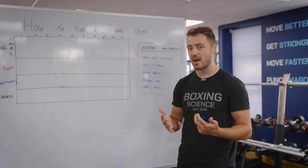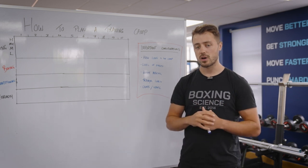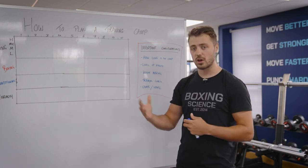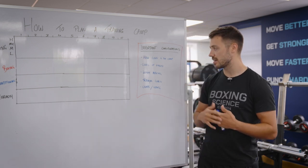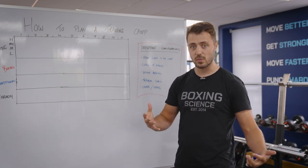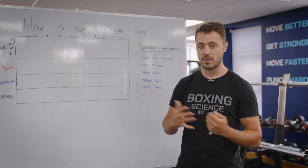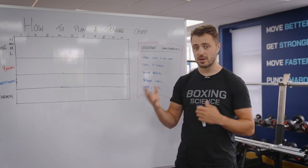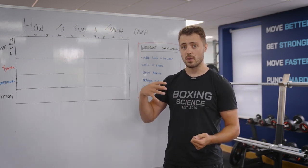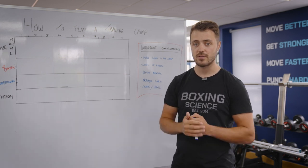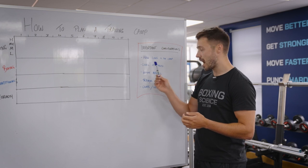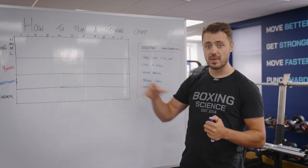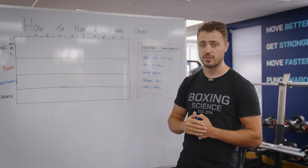Before we start any program for any of our athletes we've got a range of different important considerations to make before we start putting in different training methods and learning patterns. The first consideration is how long is the training camp? Is it 8 weeks, 10 weeks, 12, maybe even more in this current climate with the pandemic. How long the camp is really defines what kind of training methods that we're supposed to be implementing and also the different learning strategies as well.